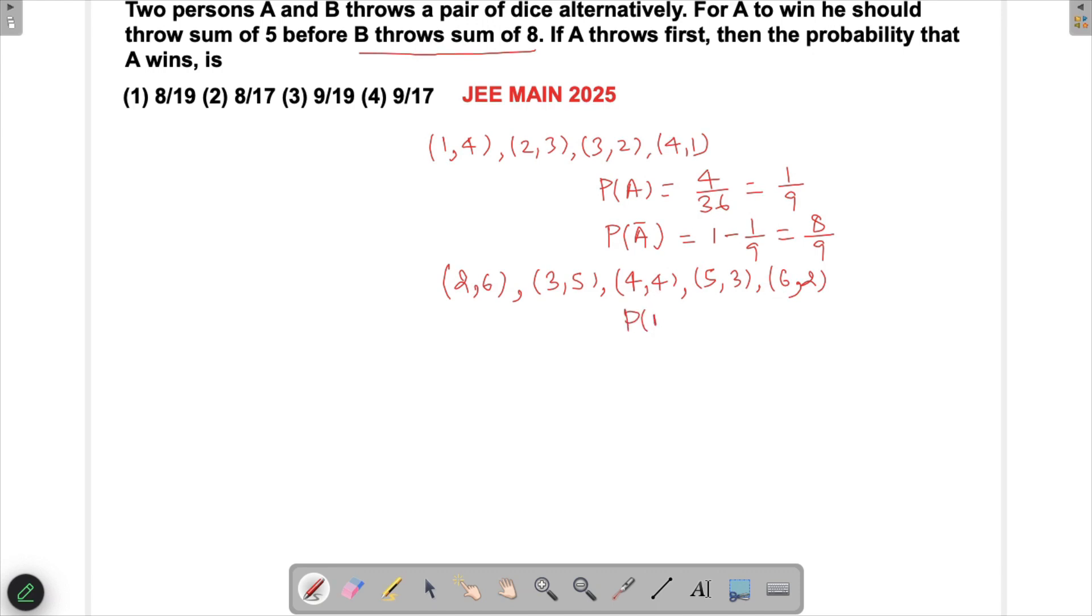All in all there are 5 possibilities out of 36, so his probability of winning P(B) is 5/36. His probability of failure will be 1 - 5/36 = 31/36.